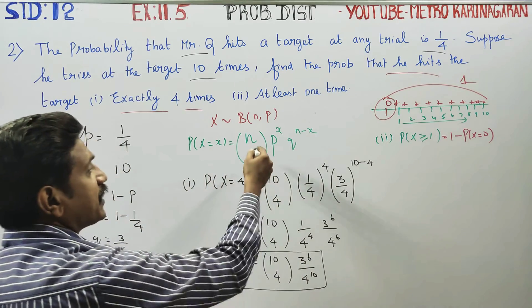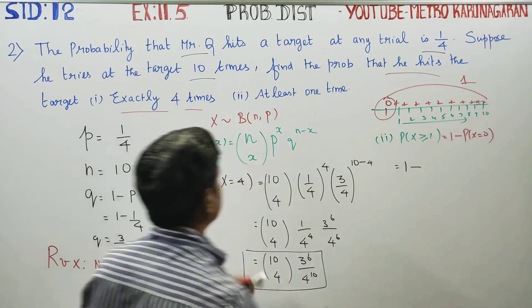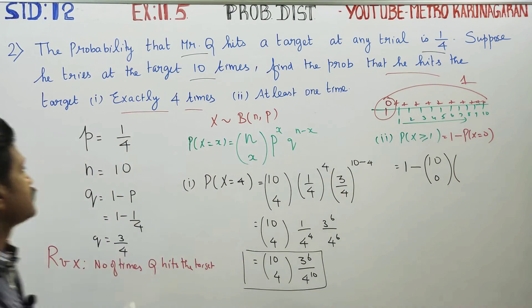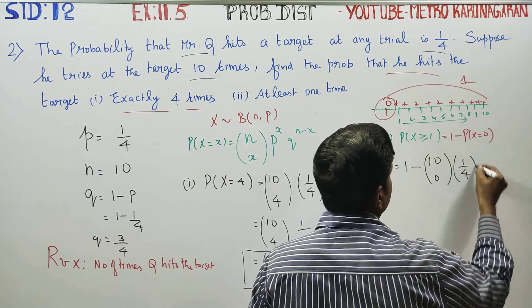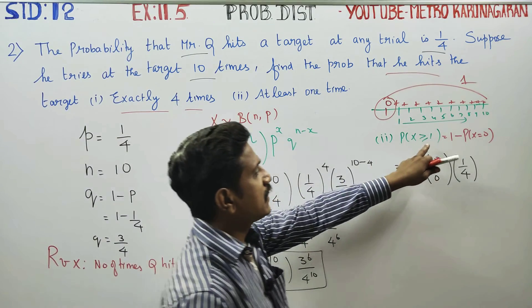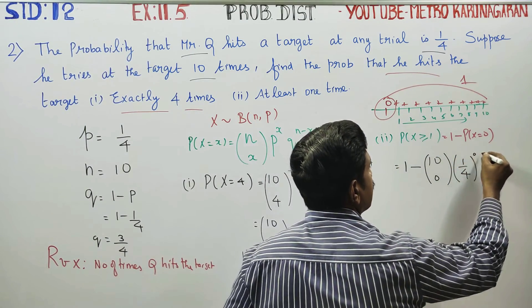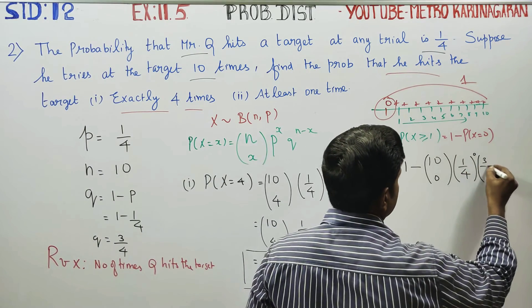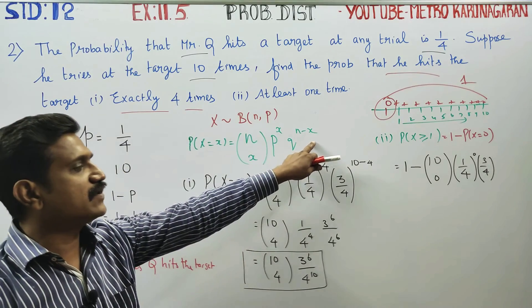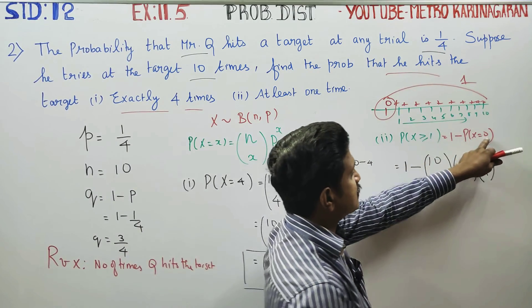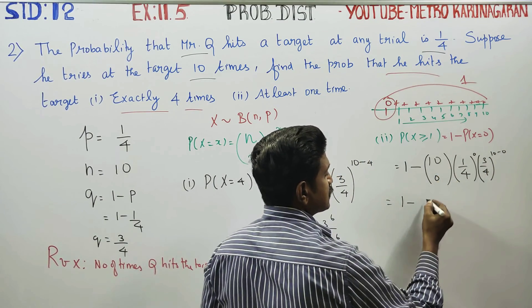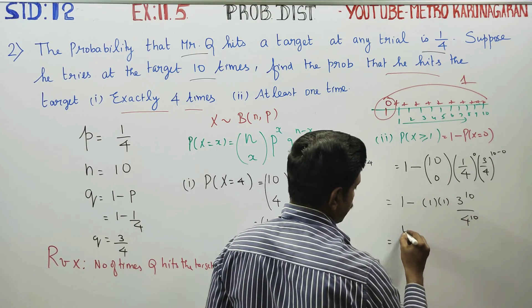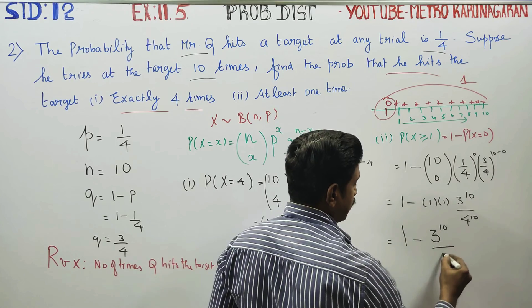We can give formula to the formula. So P(X ≥ 1) equals 1 minus P(X equals 0), which is 1 minus 10C0 times (1 by 4) power 0 times (3 by 4) power n minus x. n is 10, x is 0, so n minus x is 10 minus 0 equals 10. Now, 10C0 equals 1 and anything to the power 0 equals 1. Therefore, your answer will be 1 minus 3 power 10 by 4 power 10.